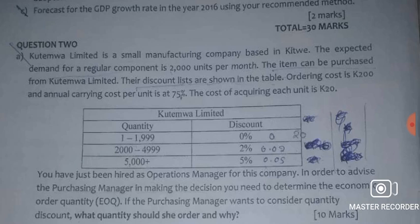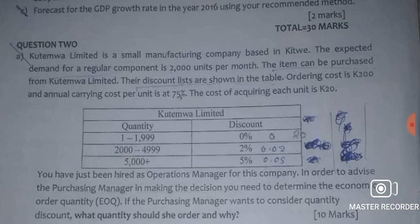We want to determine the optimal order quantity — the EOQ. When dealing with EOQ with discounts, we first need to see which range of quantity applies. The ranges are: 1 to 199, 200 to 499, 500 to 4999, and 5000 plus. The first step is to determine the EOQ at the lowest acquisition price.